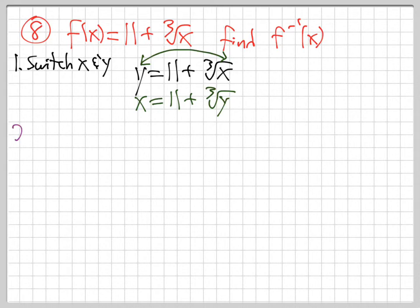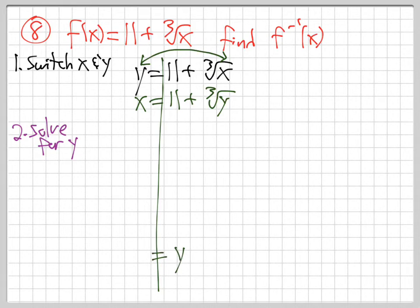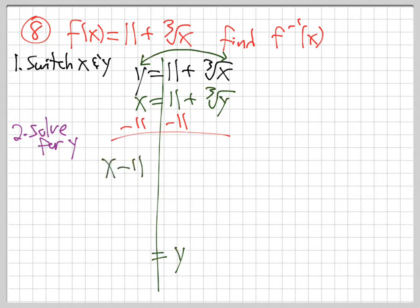Step two: solve for y. Subtract 11 from both sides — x minus 11 equals the cube root of y. Now, how do you get rid of that cube root on y? Cube it — raise both sides to the 3rd power. Powers and roots are opposites: they undo each other like a poison and its antidote.